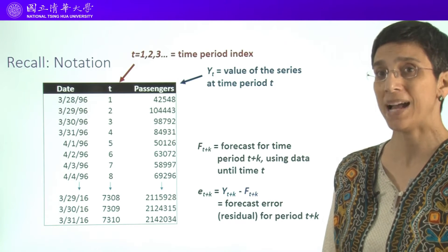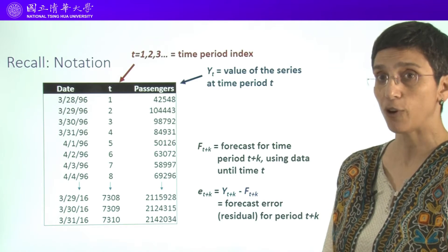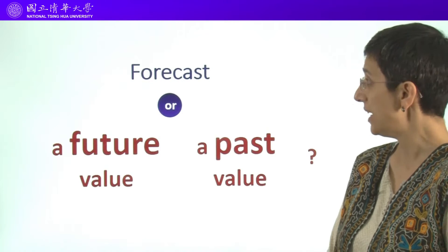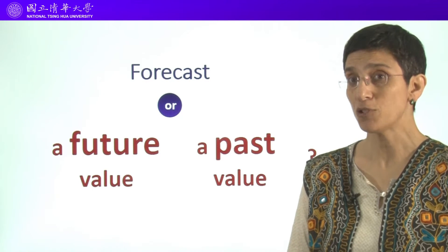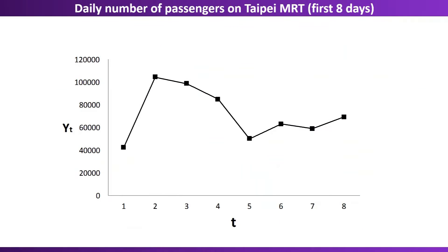Here we're looking at passengers on a certain day, and then we talked about the forecast and the forecast error. Using this example, let's talk about the difference between forecasting a future value and forecasting a past value. Suppose that we're looking at eight days of data, where the x-axis is t from 1 to 8, and the y-axis is the number of passengers, denoted y_t.